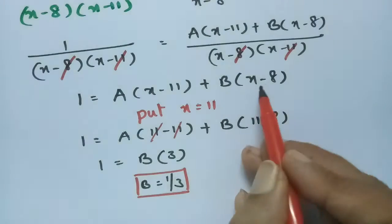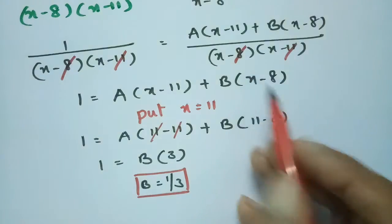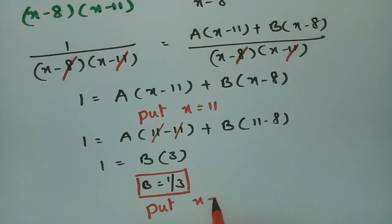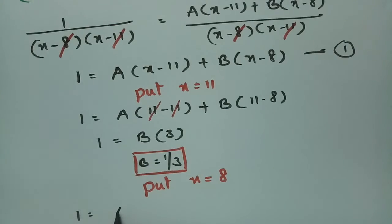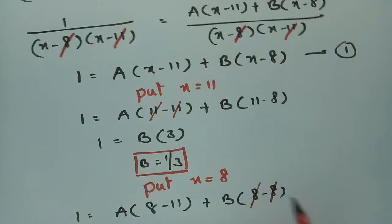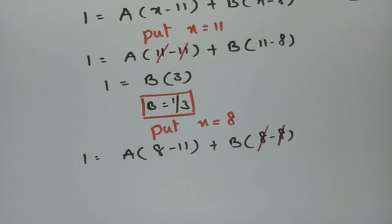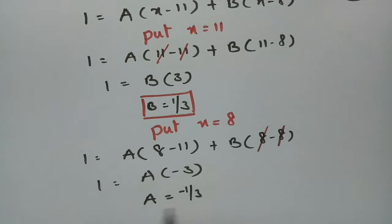After getting B, I put x equal to 8 in equation 1. So: 1 = A(8 minus 11) + B(8 minus 8). The B term becomes zero since 8 minus 8 = 0. Therefore, 1 = A times (minus 3), so A = minus 1/3.